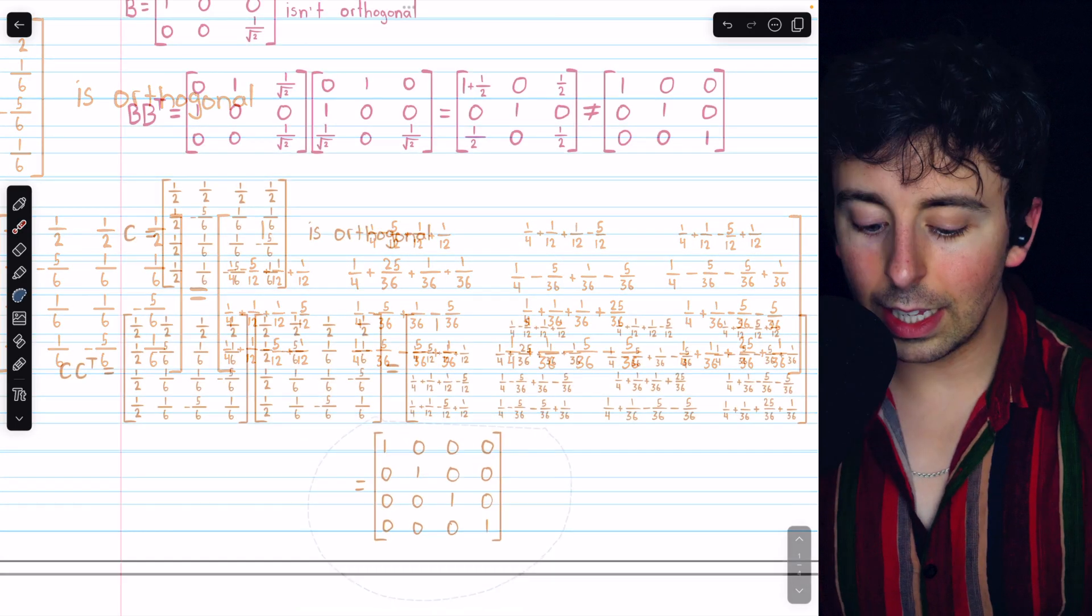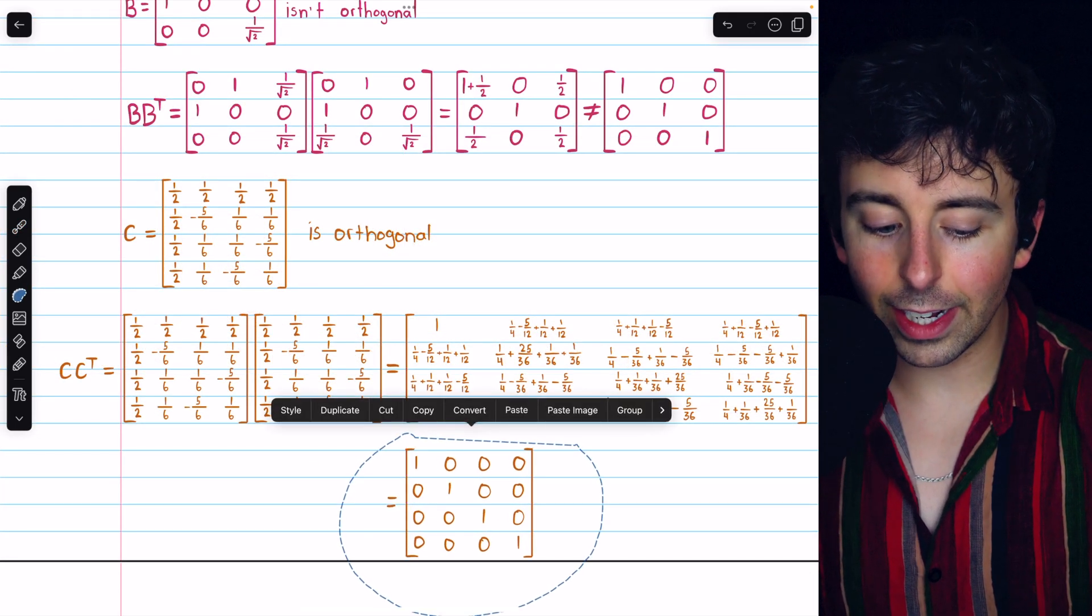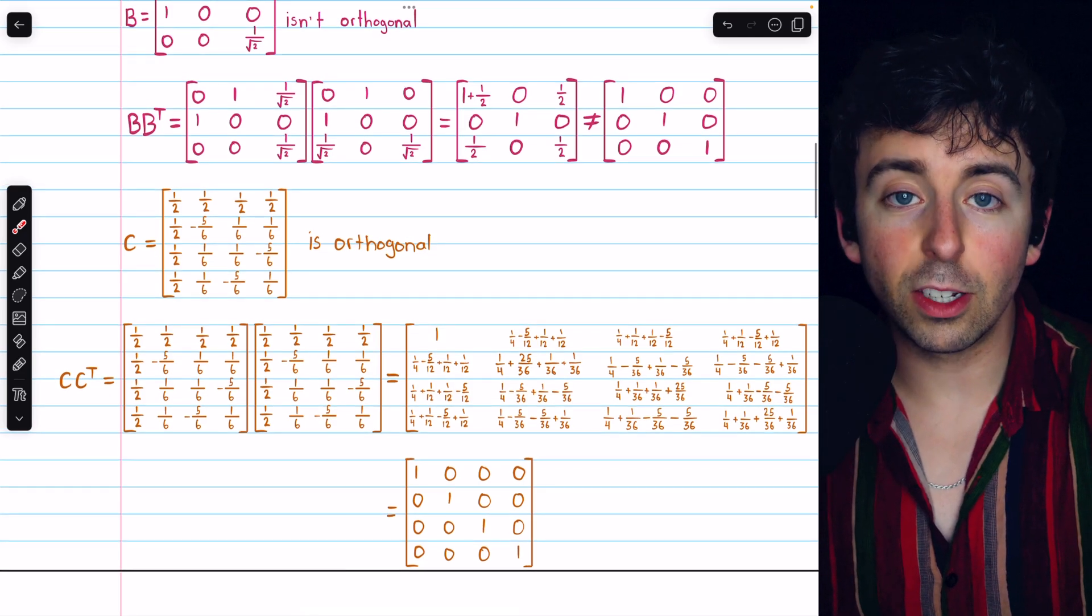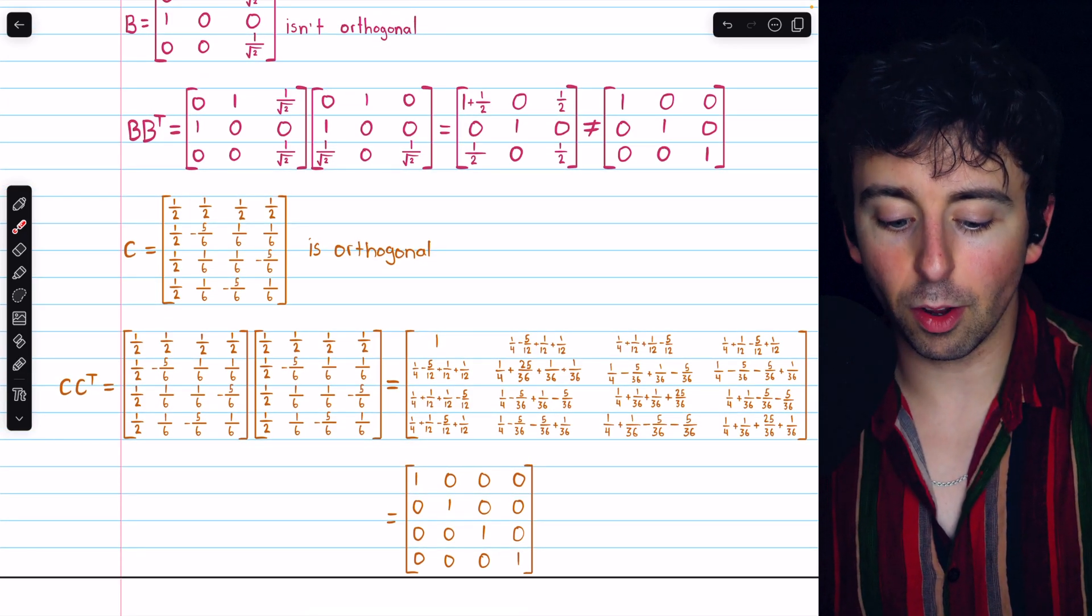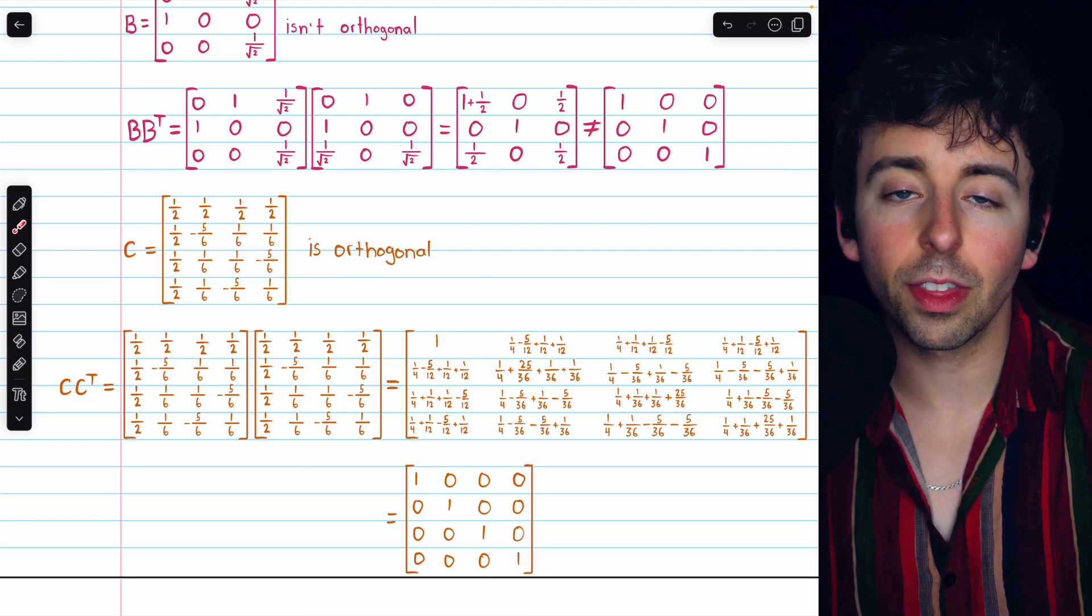In the end, it does equal the identity, and so, since C times C transpose is the identity, C and C transpose are inverses, so by definition, C is an orthogonal matrix.